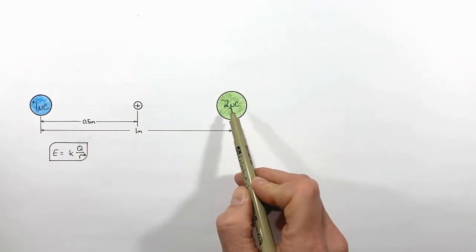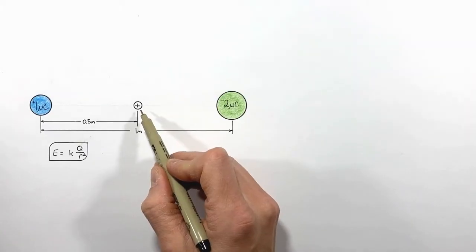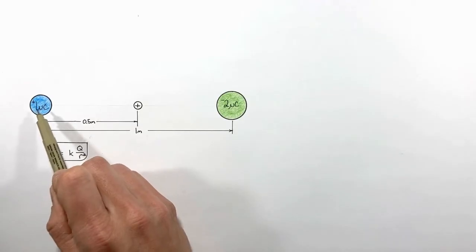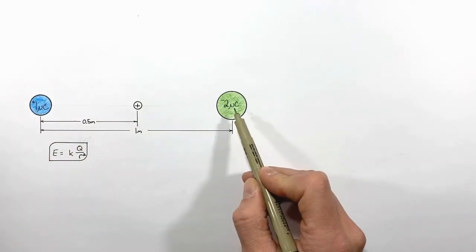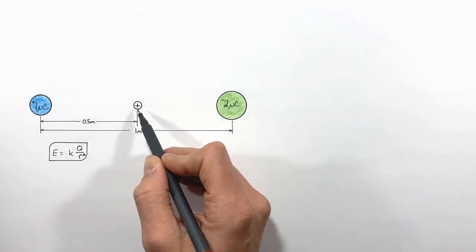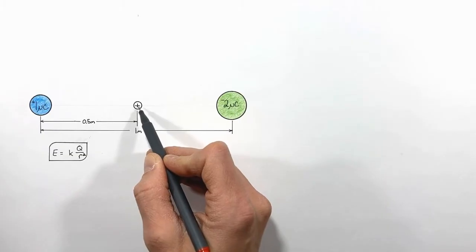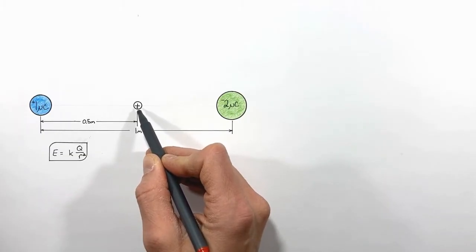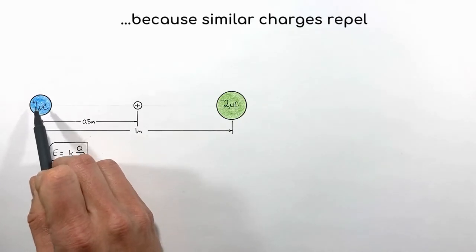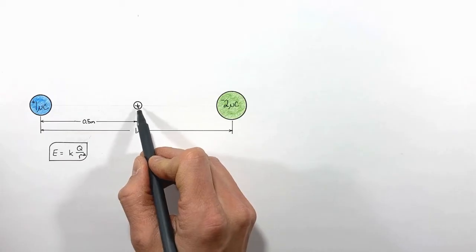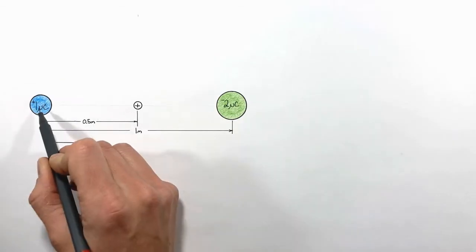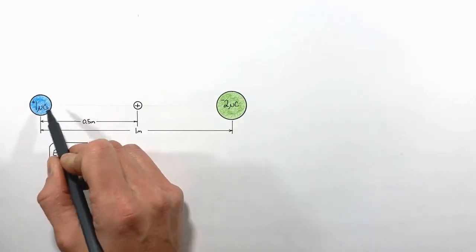In this problem we have two separate charges, so in order to determine the total electric field at this point, we're going to look at the electric field as a result of each charge separately. If we place a positive test charge at this point, it is going to repel this positive one micro coulomb charge sitting over here a half meter away. That means this positive test charge will be pushed to the right — the electric field from this positive one micro coulomb charge is to the right.